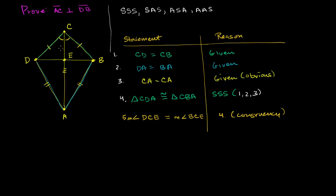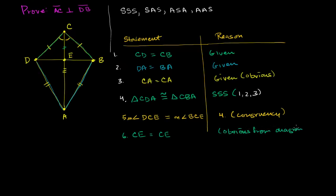Now we can do something interesting with the two smaller triangles — the top left and top right of this kite-like figure. We have two corresponding sides congruent, two corresponding angles congruent, and they share a side. Statement 6: CE equals CE — obvious from the diagram, it's the same line segment shared by both triangles.